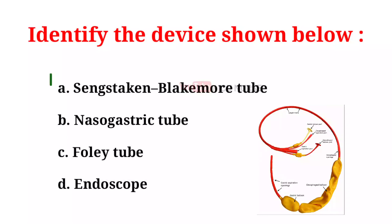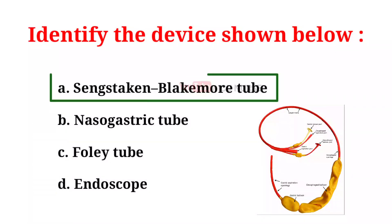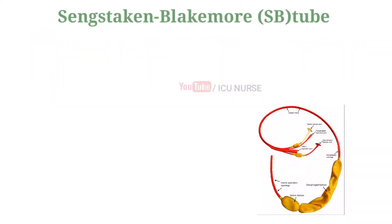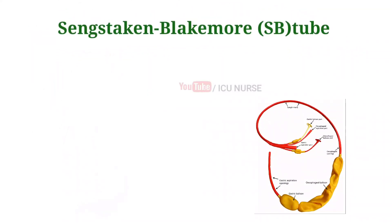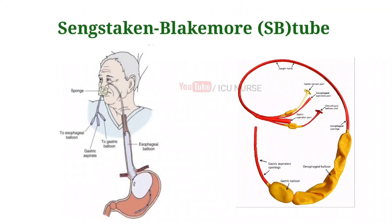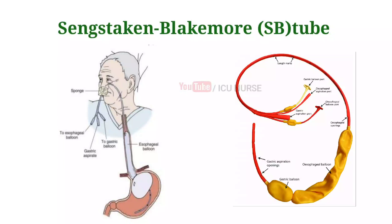A. Sengstaken-Blakemore Tube. It is a tube used to stop or slow bleeding from the esophagus and stomach due to esophageal varices.